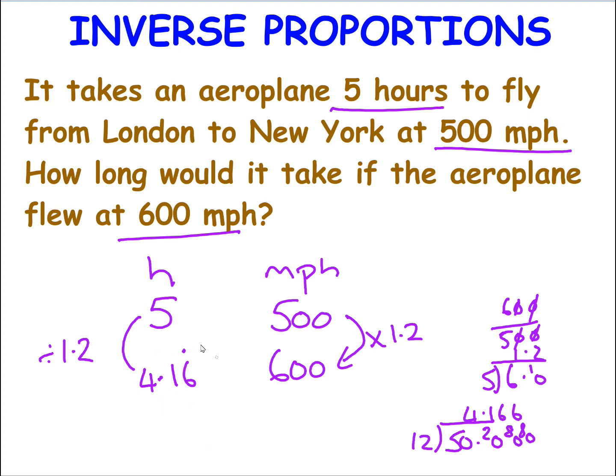Don't worry about this decimal time. We will cover that in measures next week. And did you spot the recurring spot on the top of the 6? Because when I was doing the division over here, I could see I was constantly getting a 6 as my answer. So instead of carrying on, I could put 4.16 recurring.